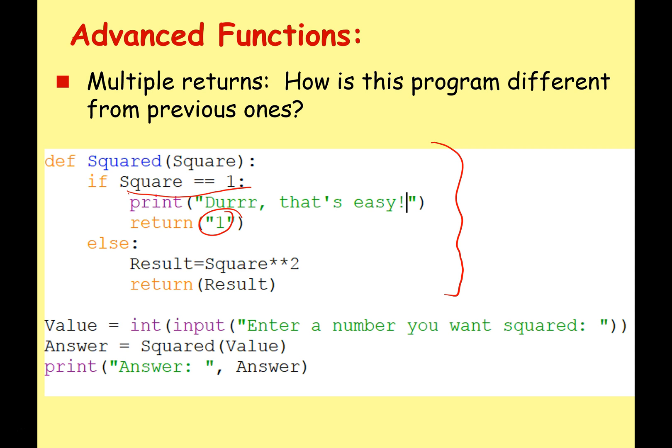So if somebody has typed in that the value they want to square is one, just return one. Otherwise, perform the actual function to the power of two and then return it.